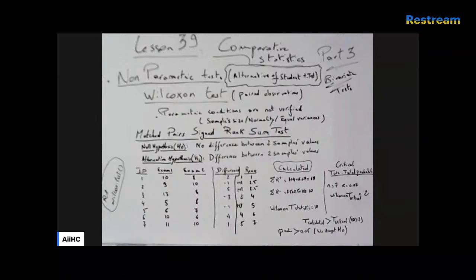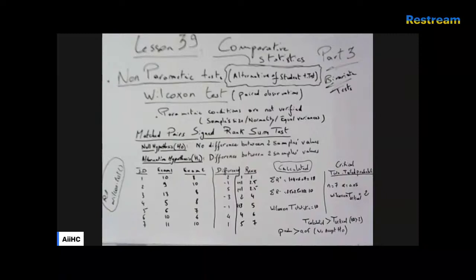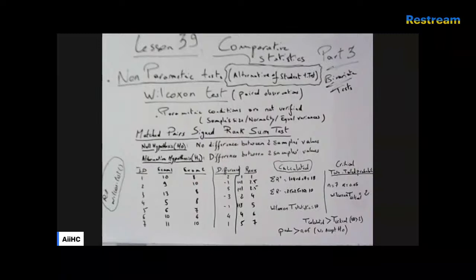That is all about the Wilcoxon test. The ranking step requires care, but done slowly and precisely it is manageable. Unlike lesson 38's chi-square correction where we subtracted 0.5 from the difference, in lesson 39 we make no correction in the manual calculation. Under R, the wilcox.test function adds continuity corrections automatically, giving a more refined result.